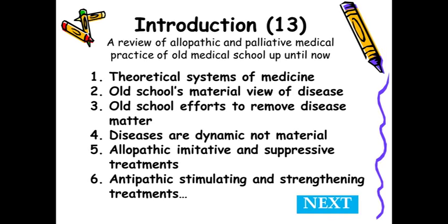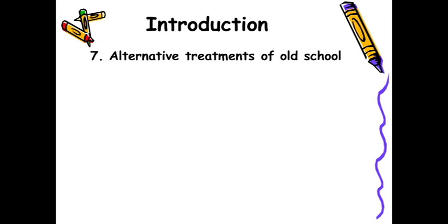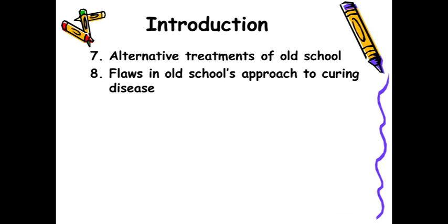Antipathic stimulating and strengthening treatment — vitamins sort of, though the word was not there, but stimulants, strength-gaining tonics — that strengthening and stimulating is what has been condemned by Hahnemann. Then alternative treatments of the old school, then flaws in the old school approach to curing disease. Then compound prescriptions — prescribing more than one remedy — unfortunately today in homeopathy also we have persons prescribing a number of remedies simultaneously, running together, which is following what Hahnemann had condemned.